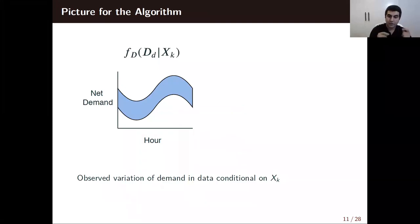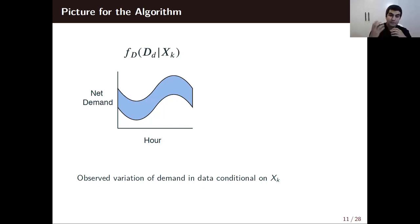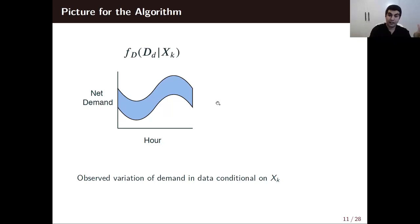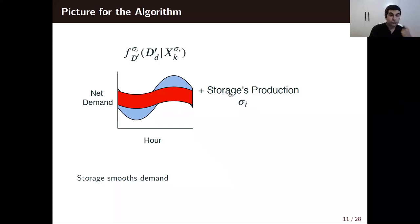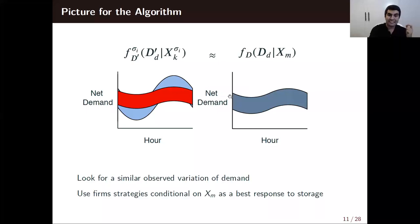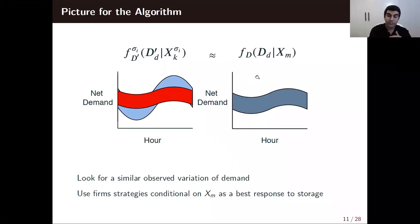To explain the identification strategy for calculating supply function equilibrium: for some public signal such as a weather forecast, firms estimate a distribution for net demand — demand after renewable production — for the whole day. When you add energy storage on top of that, since energy storage smooths prices, and since prices are closely correlated with demand, it smooths the net demand distribution as well. If we observe a net demand distribution in the data that looks like the smoothed version, we can use firm strategies — bids in this case — as a best response to energy storage and find an equilibrium using those strategies.